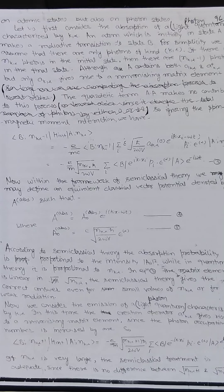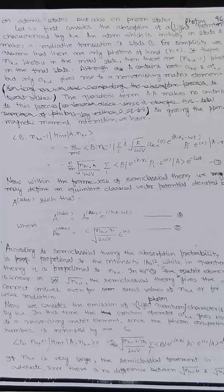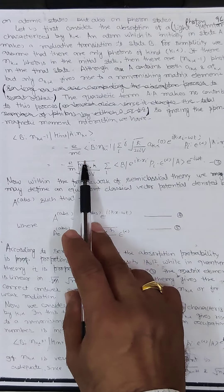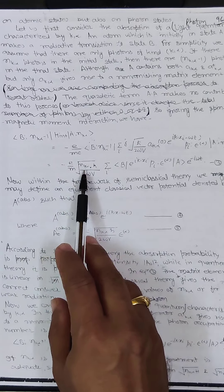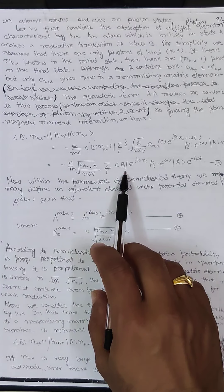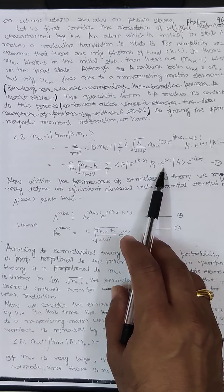The quadratic term A · A makes no contribution to the process. Ignoring the spin magnetic moment interaction, we have ⟨b, n_{k,α}-1 | H_int | n_{k,α}⟩ = -e/mc, and the result can be written as: -e/m · √(n_{k,α} ℏ / 2ωV) · Σ_i ⟨b| e^{ik·x_i} p_i · ε_α |a⟩ · e^{-iωt}.